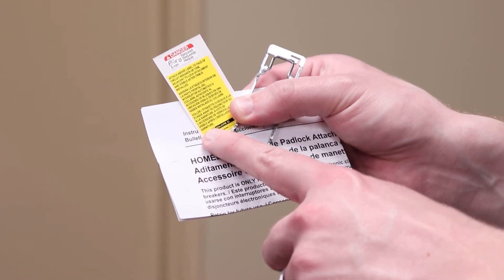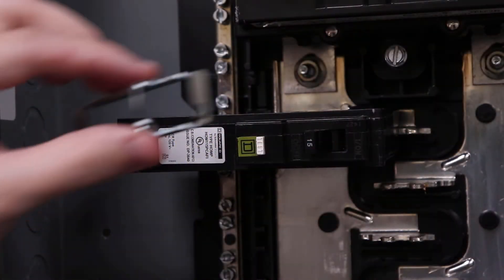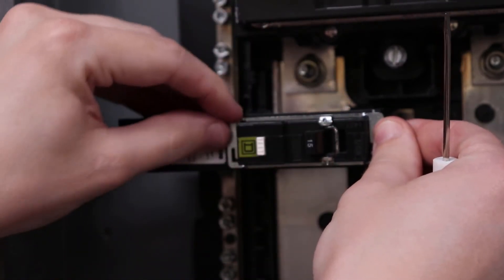Provided with the kit are the instructions, the label, and the padlock attachment itself. Place the padlock attachment over the face of the breaker and then use a screwdriver to slide the locking tabs into the slots.